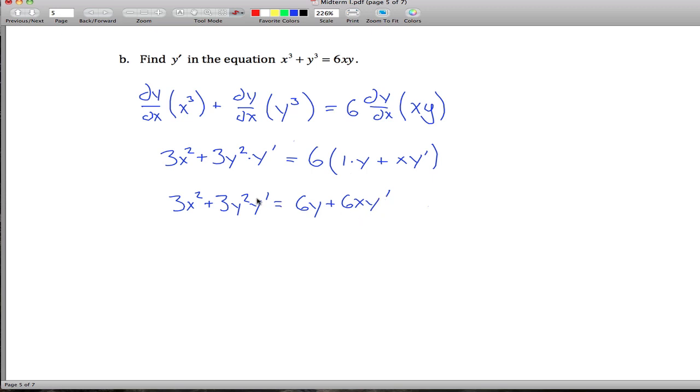And then to solve for the y prime, I think the easiest way is to get all the terms with the y prime in them on the same side of the equation, and the terms without the y primes in them over to the other side. So if we do that, we leave this term alone, subtract this guy over to the left, leave the 6y alone, and subtract this guy over to the right.